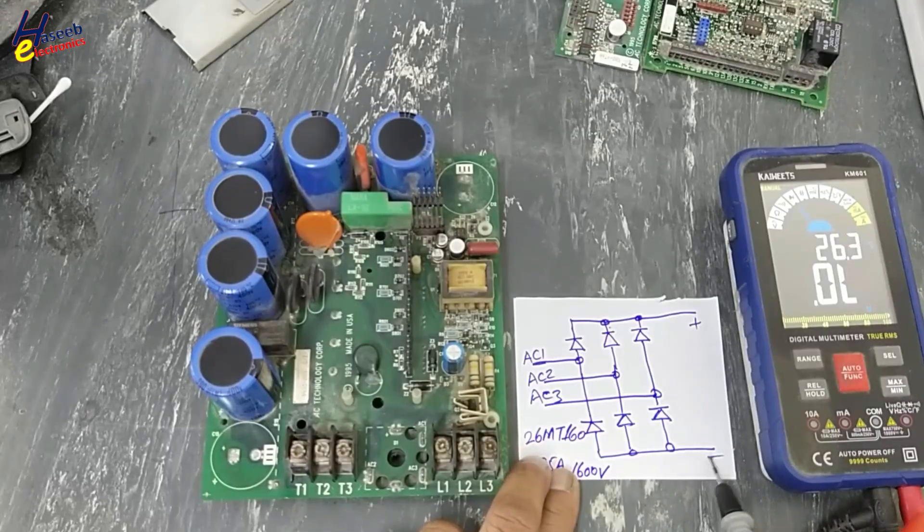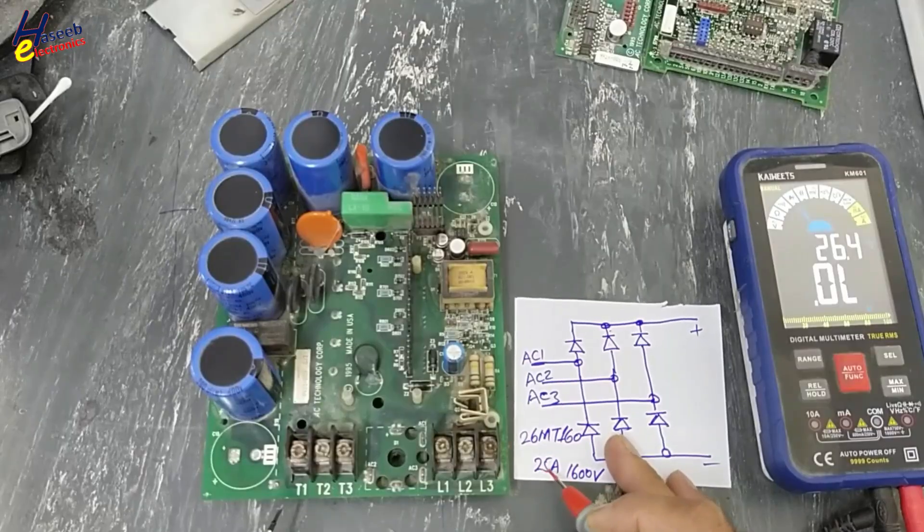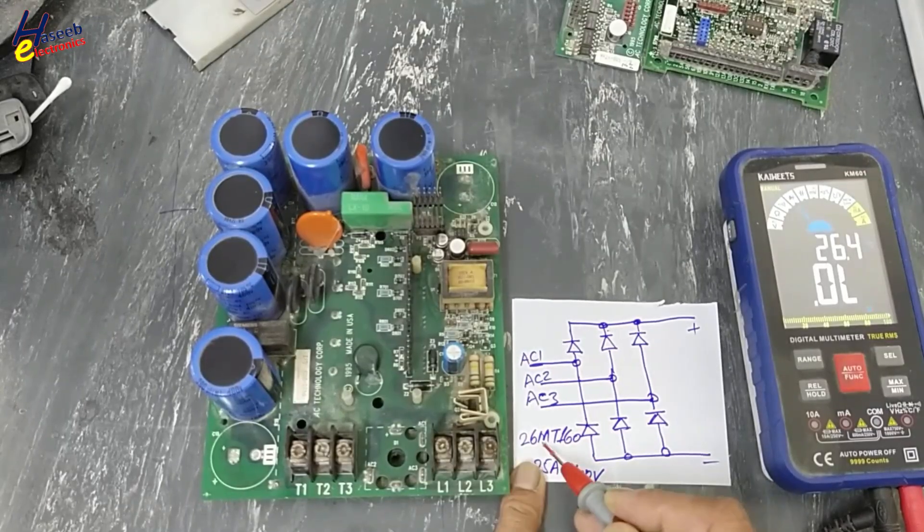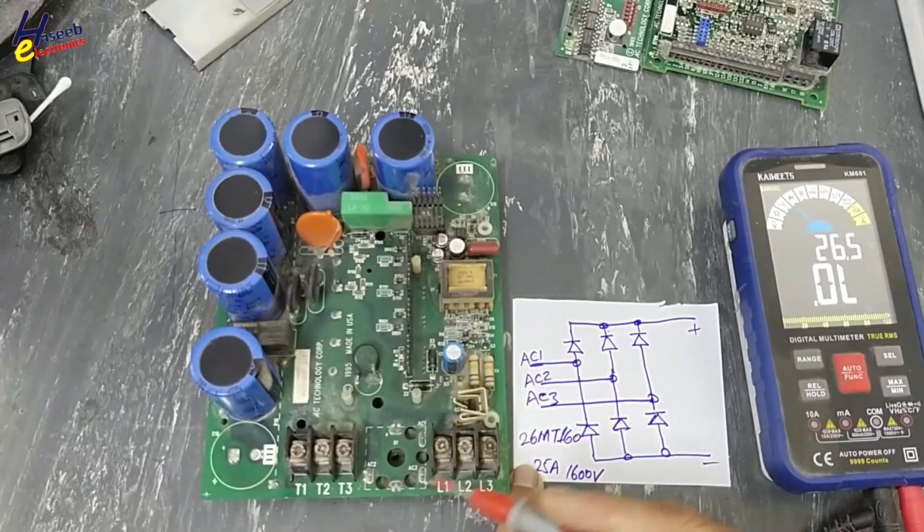Part number 26MT160. It is 25 ampere average current. MT marking for bridge rectifier from International Rectifier. 160 means 1600 volt data blocking voltage of the diodes.